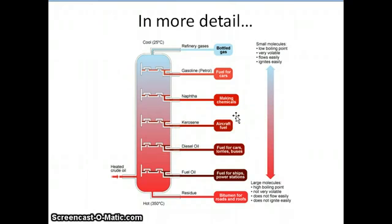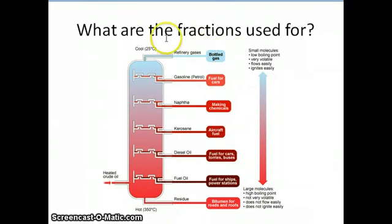These products include kerosene, diesel oil, and others—these are the long chain molecules. The refinery gases are used for bottled gas, such as in Bunsen burners and lighters, while gasoline is used for cars and motorbikes.